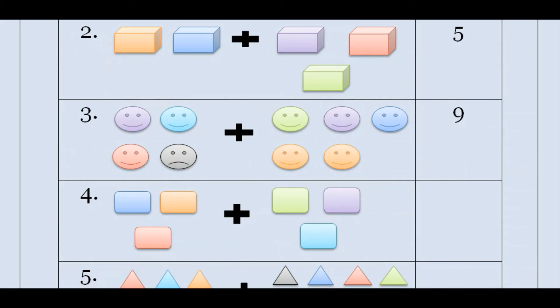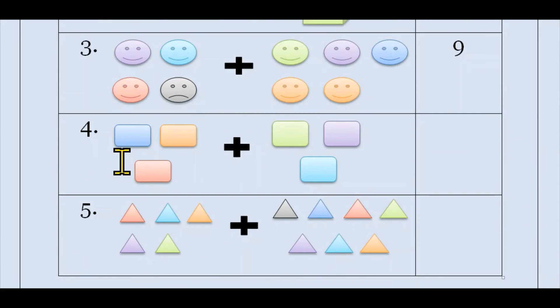So students, let's see our fourth question. Here you can see squares. We have to count this and add them. So let's count: here given 1, 2, 3 squares and here 1, 2, 3. So let's count: 1, 2, 3, 4, 5, 6. It means 6 squares are there. So write here 6.